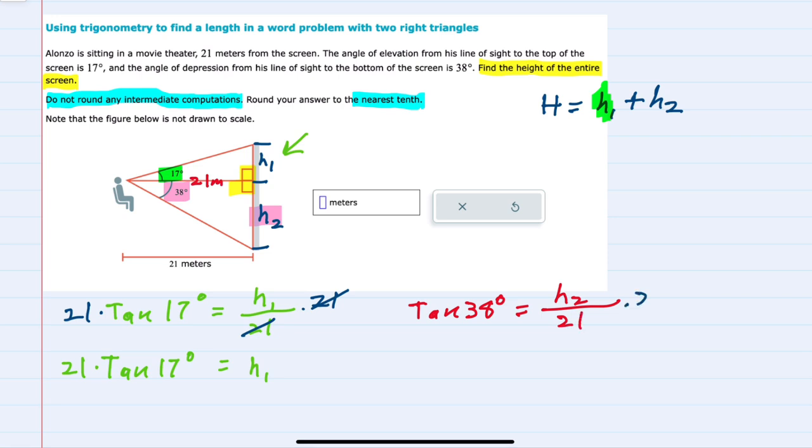Solving again means multiplying both sides by 21. That will give me the h2 by itself on that right-hand side. And 21 times the tangent of 38 degrees.